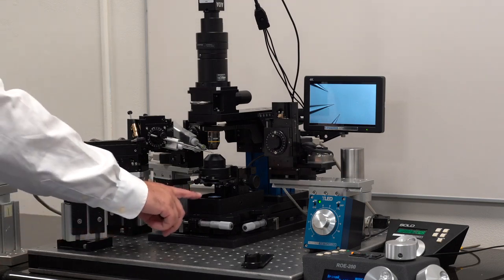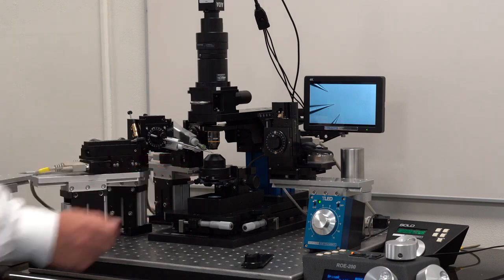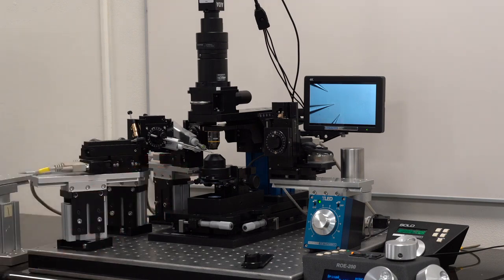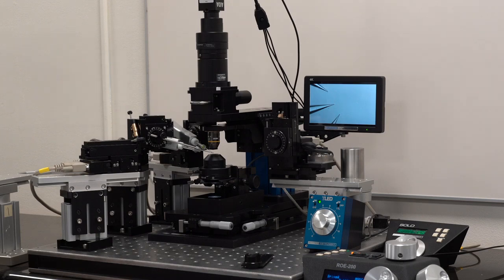This transmitted light base is a single white light LED going through the Olympus OCC condenser. OCC stands for oblique coherent contrast. It is a very nice condenser. The LED is powered with the TLED driver, which you can see here. You can send that TTL pulses if you wanted to trigger the LED on and off.